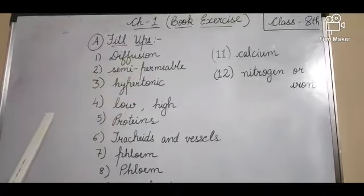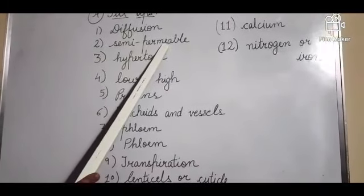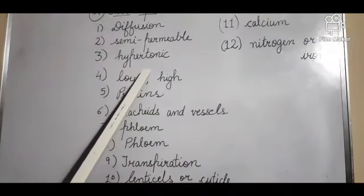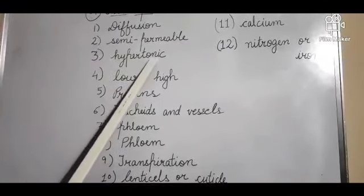Second is: osmosis takes place through a semi-permeable membrane, that is a selectively permeable membrane. Third: a cell which shrinks if it is placed in hypertonic solution.